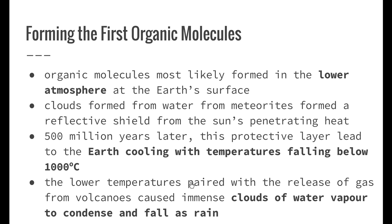So how did the first organic molecules form? Organic molecules most likely formed in the lower atmosphere at the Earth's surface. Clouds formed from water from meteorites and became a reflective shield from the sun's penetrating heat. Once water started to accumulate in the atmosphere, a protective layer began to form. 500 million years later, this led to the Earth cooling, with temperatures falling below 1000 degrees Celsius — compared to today's highest recorded temperatures of around 50 degrees Celsius in some deserts.